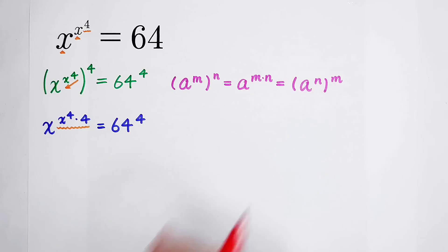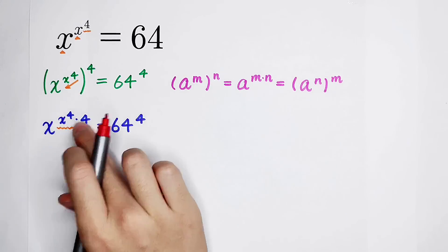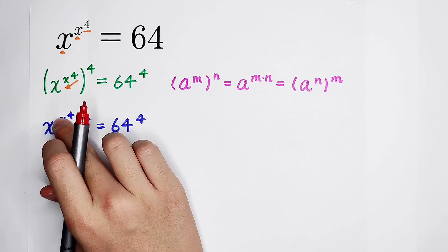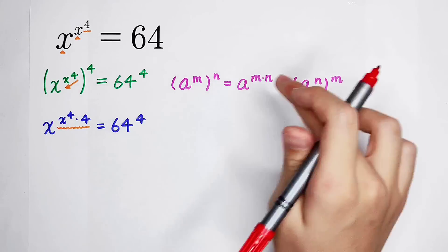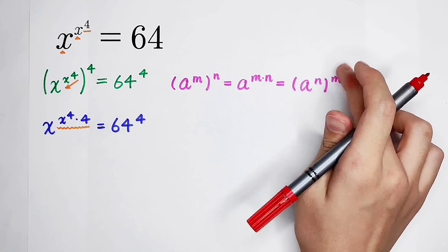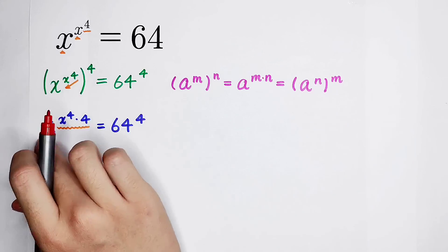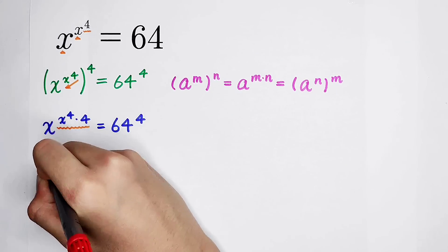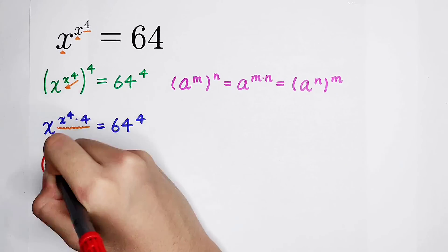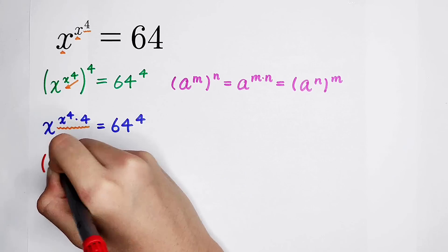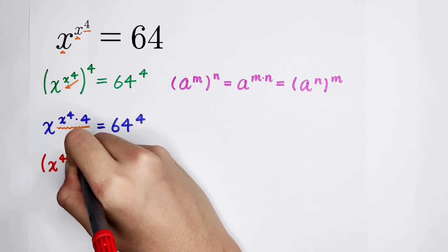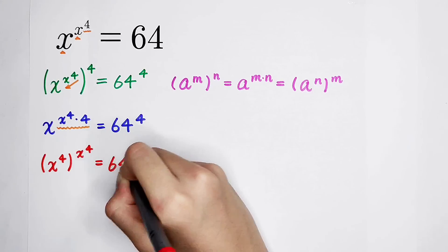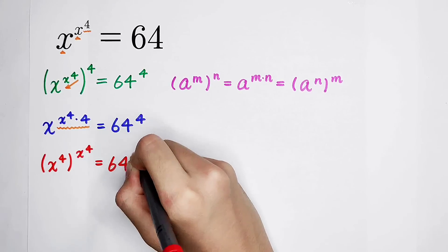Using this formula, n is 4 and m is x to the power of 4. So it is equal to h to the power of n, all to the power of m, where h is the x on the bottom. So it is equal to x to the power of 4, all to the power of x to the power of 4, equals 64 to the power of 4.